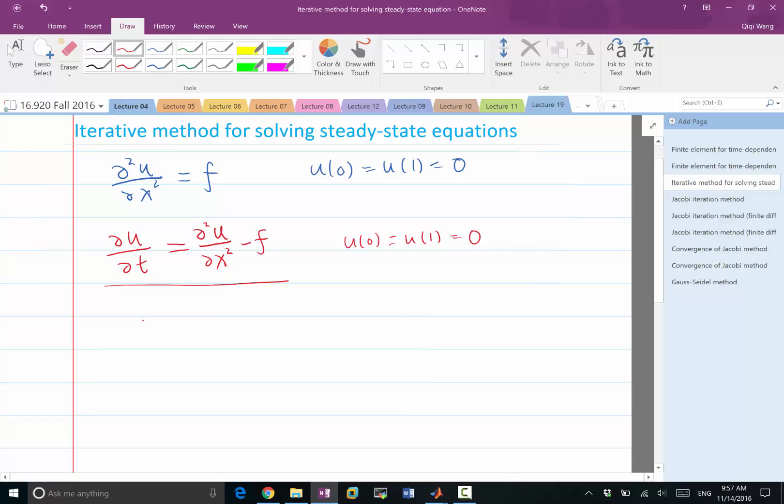So let's talk about finite difference. If we talk about finite difference, what we get is du/dt, where u is a vector, being equal to matrix A times u minus this f, where A is a finite difference approximation to the second order derivative.